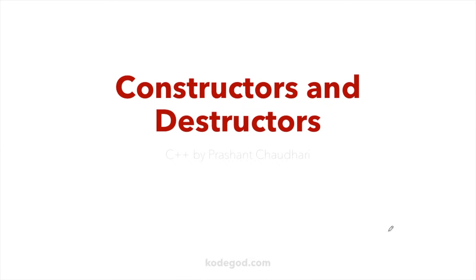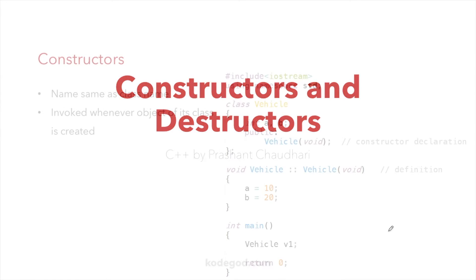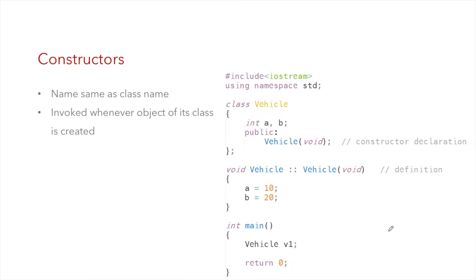Welcome back to the new topic on constructors and destructors. This is our fifth video on C++ programming language. Constructors are very important to object-oriented programming — they are special functions which have the same name as the class name, and constructors are invoked whenever an object of a class is created.